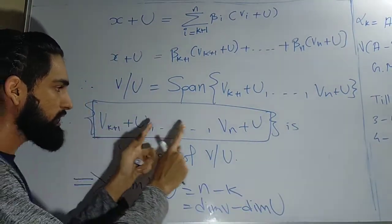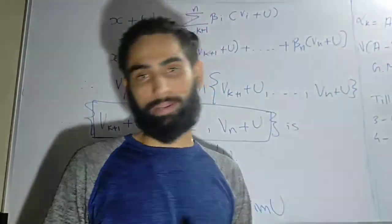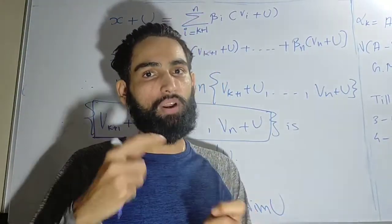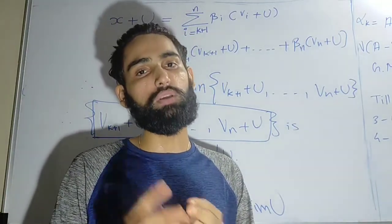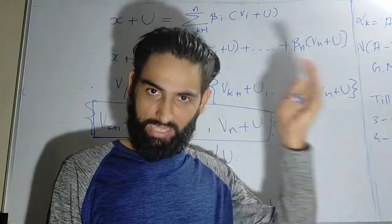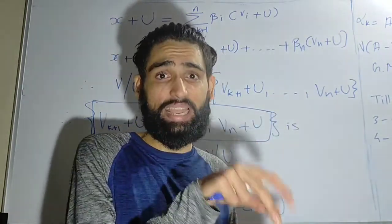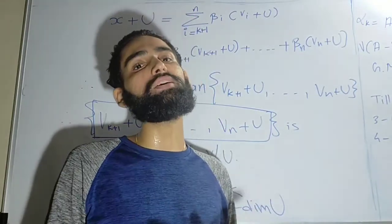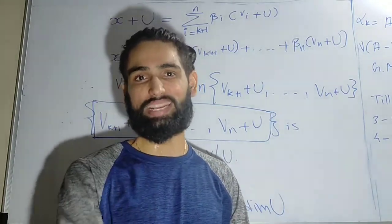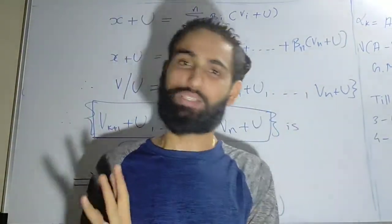To apply this theorem to an example: given a vector space V and subspace U, find the basis for U, extend it to a basis of V, and the elements you added — taken as representatives of their cosets — become the basis of the quotient space. In the next video there will be examples and a quiz. Thank you so much for watching.